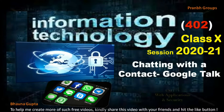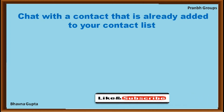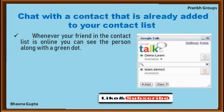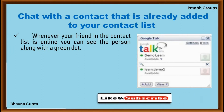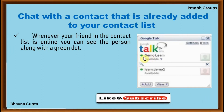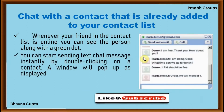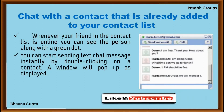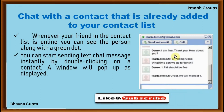Let's start today's video. First topic: chat with a contact that is already added in your contact list. Whenever your friend in the contact list is online, you can see the person along with a green dot. You can start sending text messages instantly by double clicking on the contact, and a window will pop up as displayed.